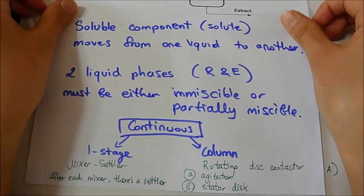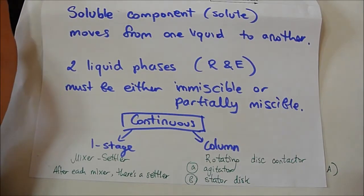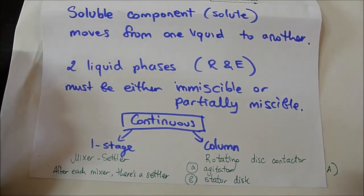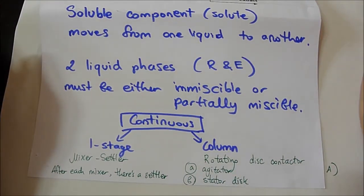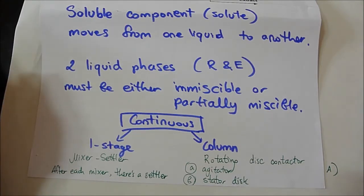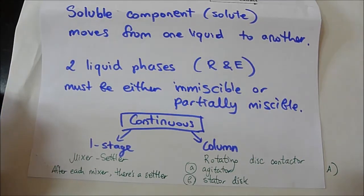The soluble component is called the solute, and the solute moves from one liquid to another across two liquid phases. We are concerned with the raffinate and the extract, and these two must be either immiscible or partially immiscible to each other. Liquid-liquid extraction usually runs as a continuous process — either a single-stage process using mixers and settlers, or a column using a rotating disc contactor with either an agitator or stator disc.